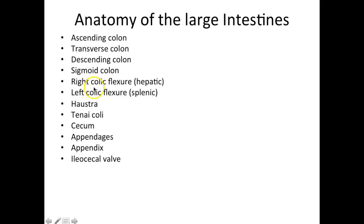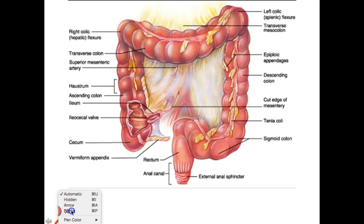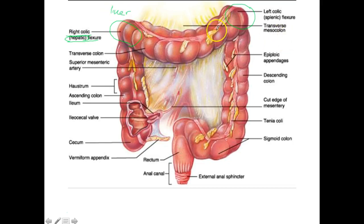You also have the right colic flexure, also called the right hepatic flexure, and the left colic flexure, also called the left splenic flexure. These are where the large intestine makes an angle and turns. The right colic or hepatic flexure is on the liver side. The left colic or splenic flexure is on the spleen side. Remember, you only have one spleen and one liver, and they're on opposite sides.